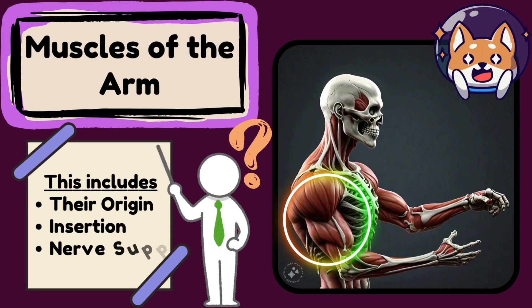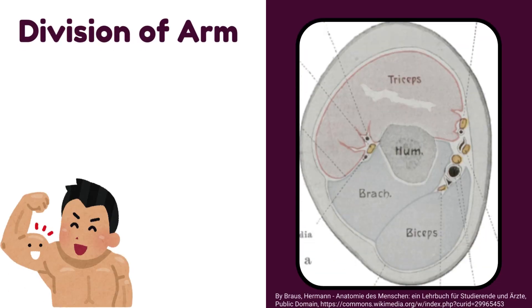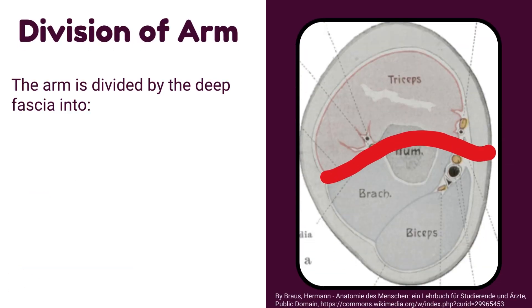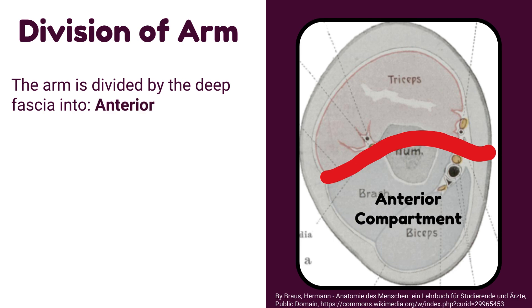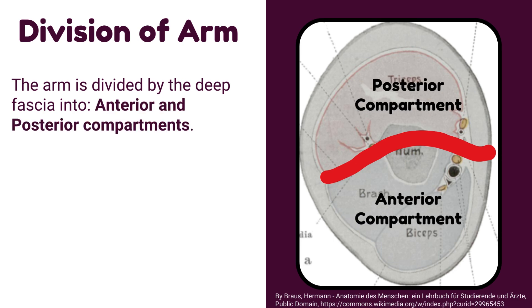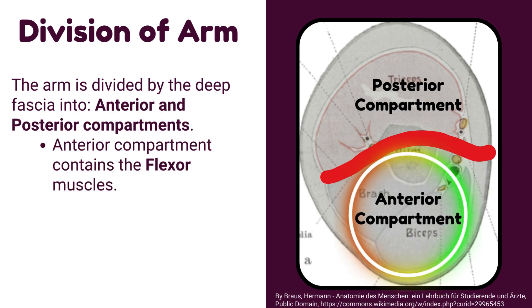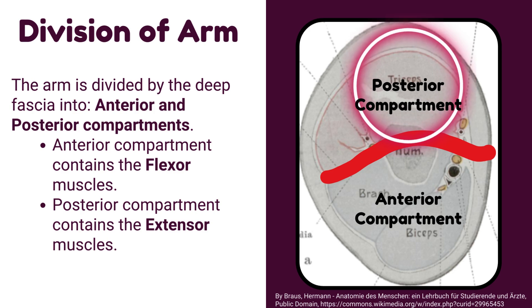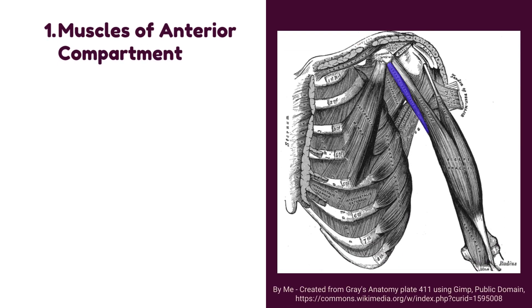In this video, we will talk about the muscles of the arm. What is the division of the arm? The arm is divided by the deep fascia into anterior and posterior compartments. The anterior compartment contains the flexor muscles. The posterior compartment contains the extensor muscles. First, we will discuss the muscles of the anterior compartment.